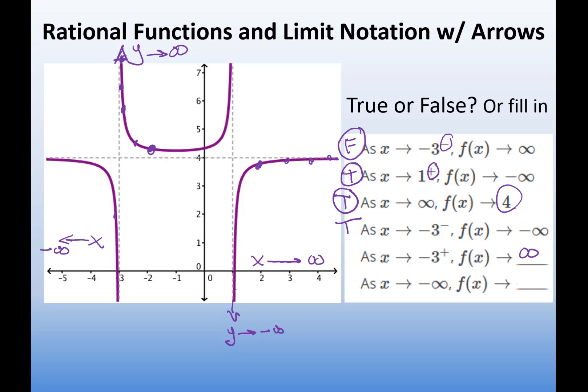negative 4, y is here. Negative 5, y is here. Negative 6, y is here. It's kind of like flattened out. It's leveled out on this number, y equals 4.